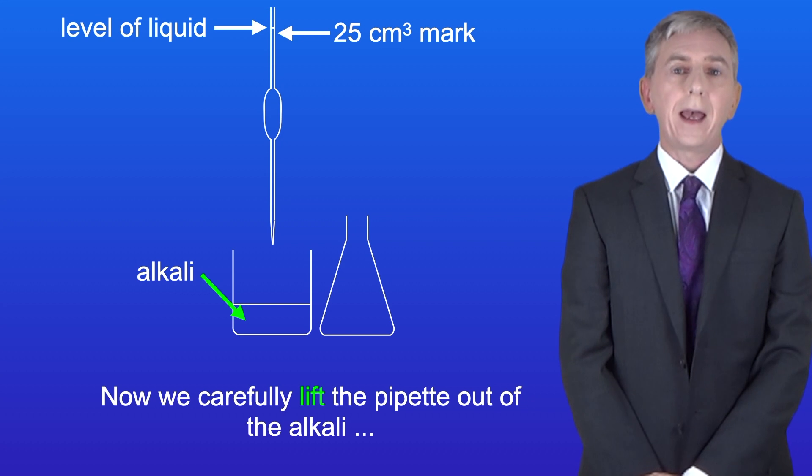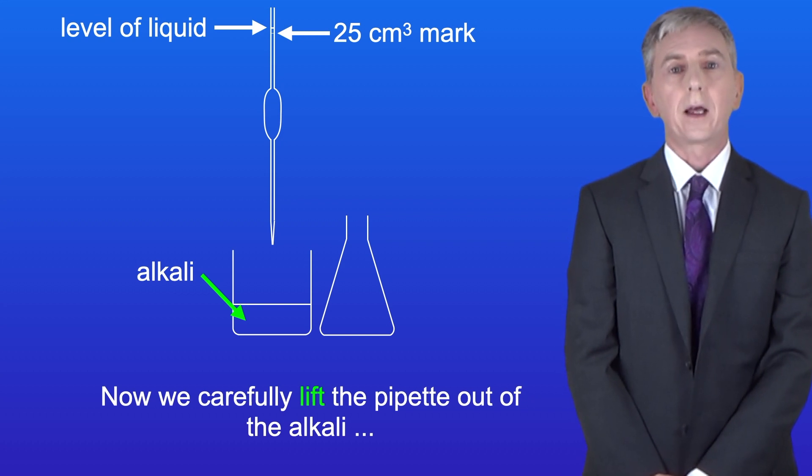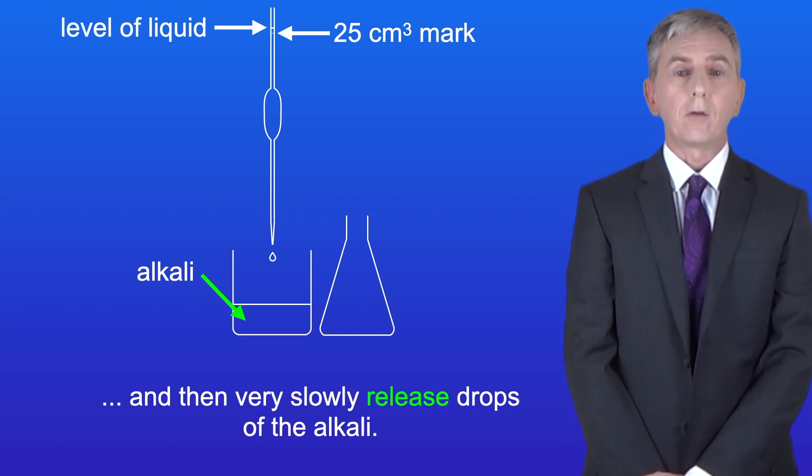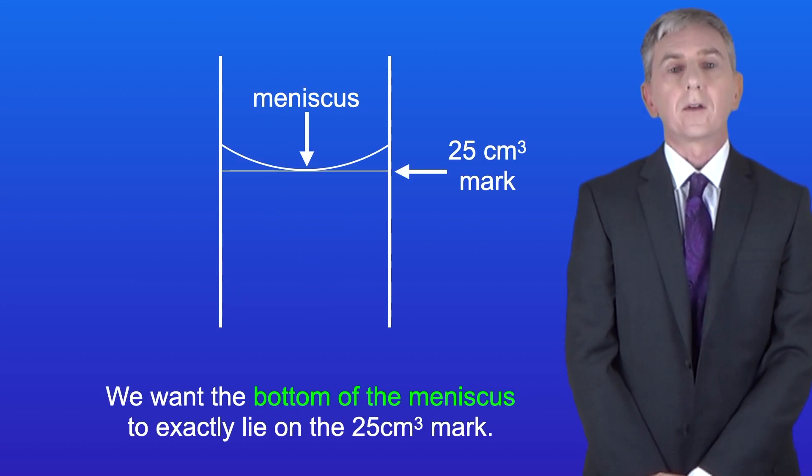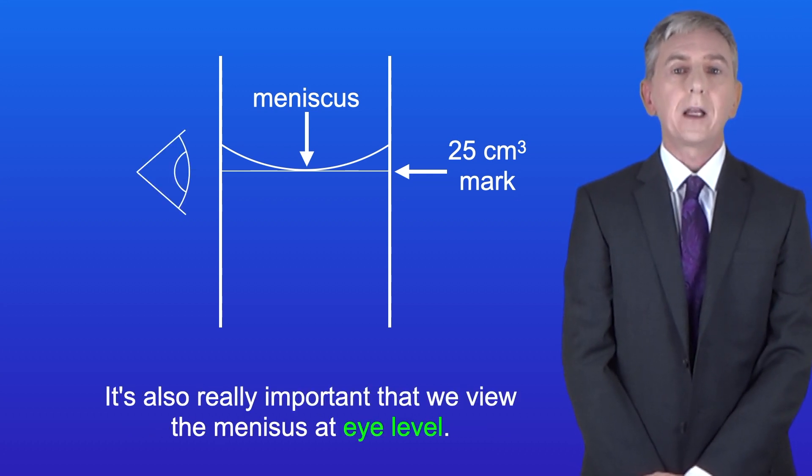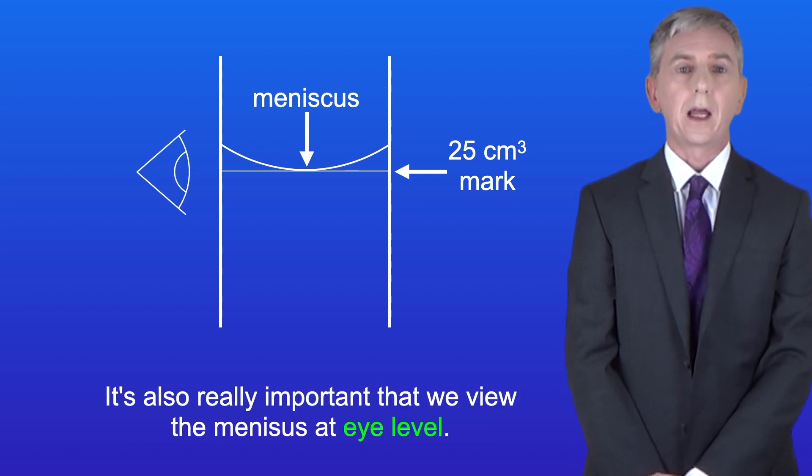So now we carefully lift the pipette out of the alkali and then very slowly release drops of the alkali. We want the bottom of the meniscus to exactly lie on the 25 cm³ mark. It's also really important that we view the meniscus at eye level.